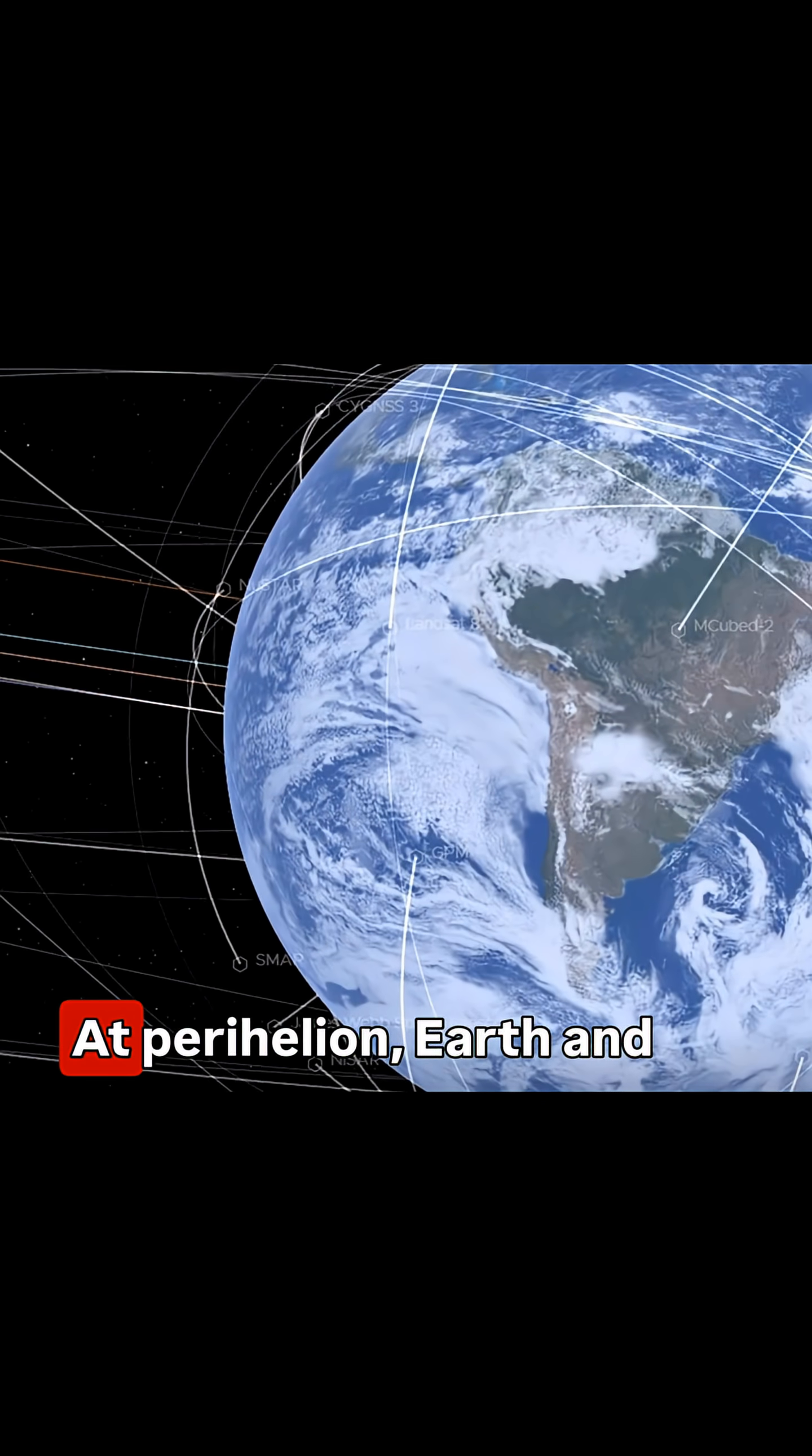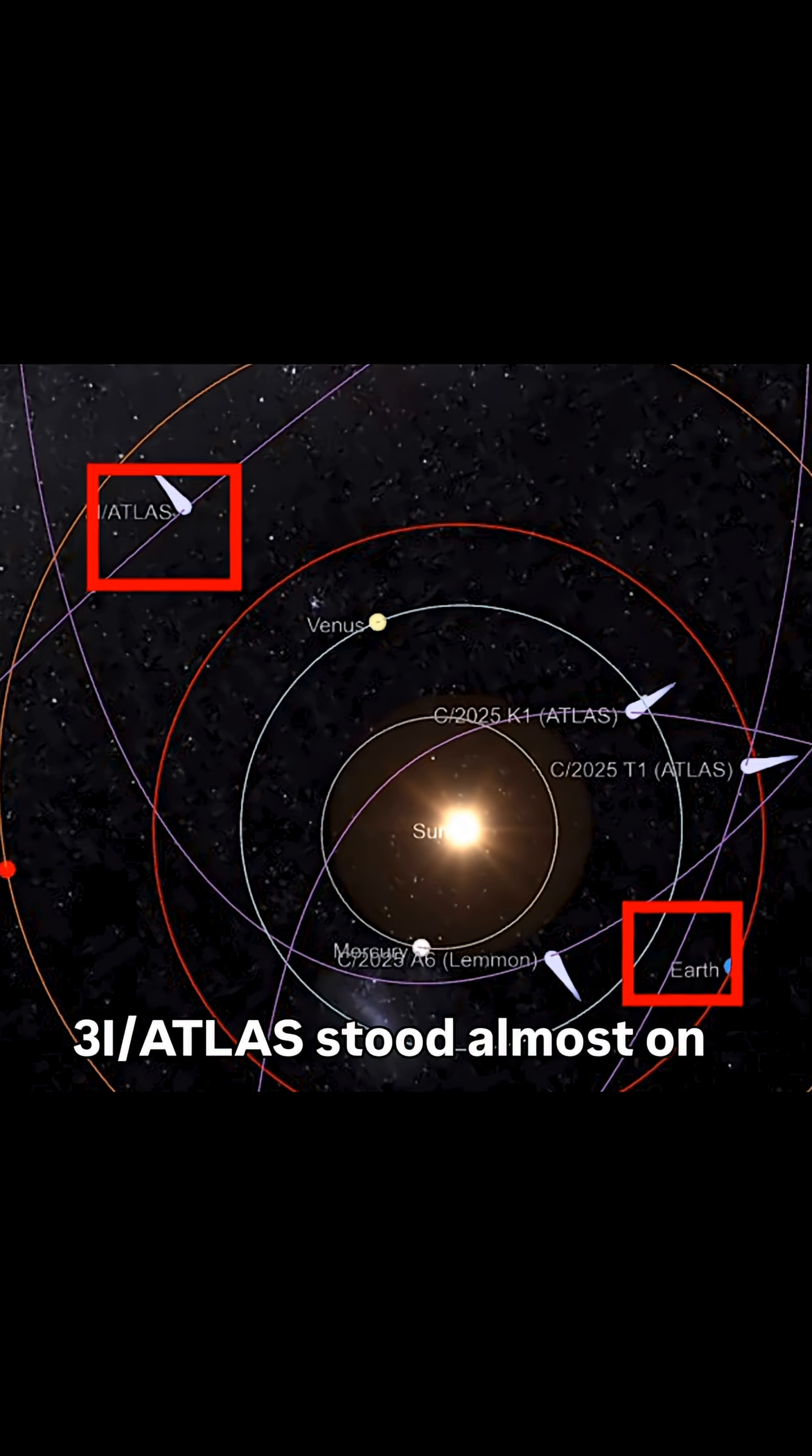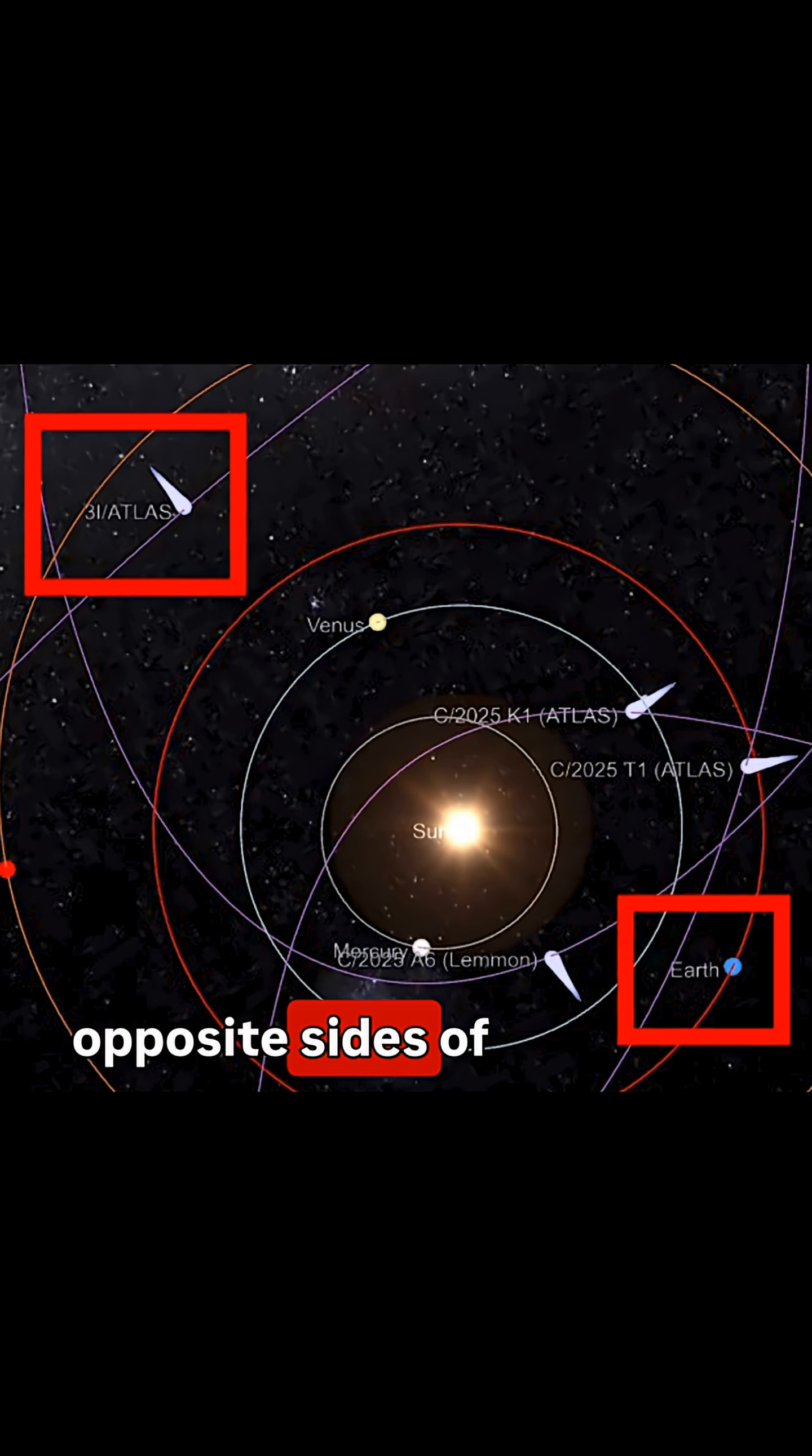Why does that matter? At perihelion, Earth and 3I Atlas stood almost on opposite sides of the Sun.